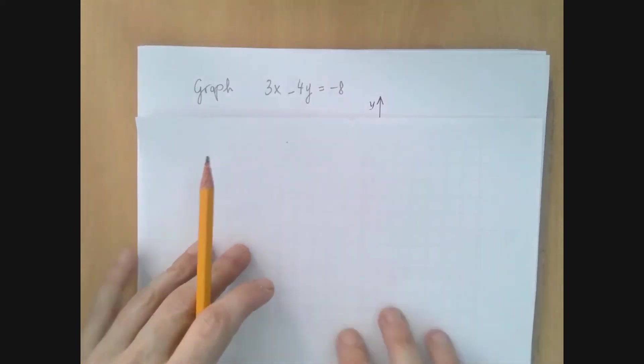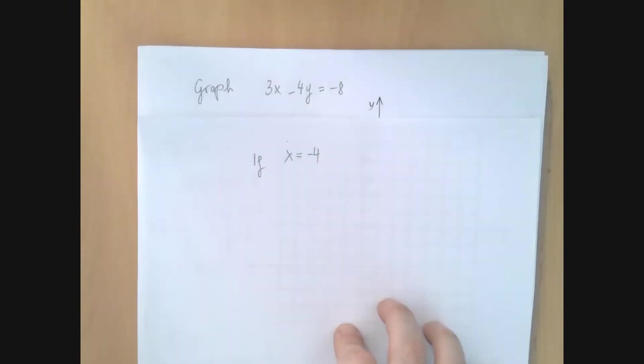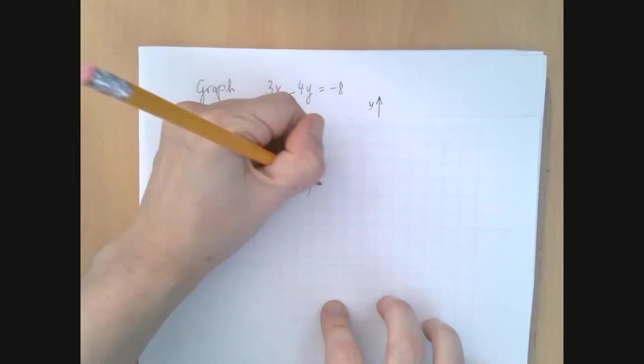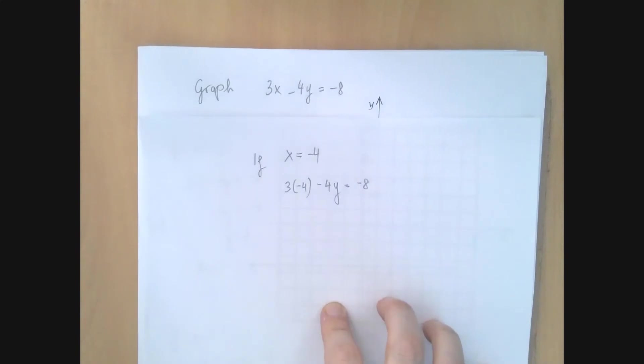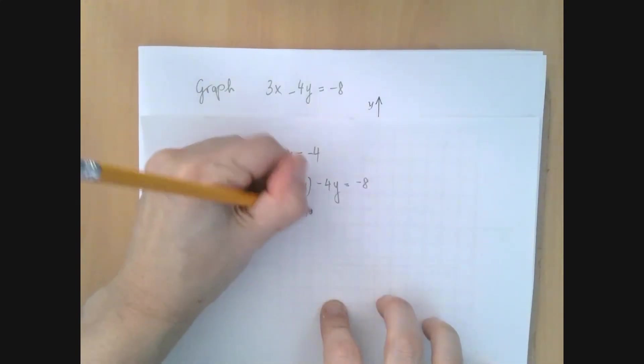If x is negative 4, then 3x minus 4y equals negative 8 will become 3 times negative 4 minus 4y equals negative 8, which is the same as minus 4y minus 12 equals negative 8.